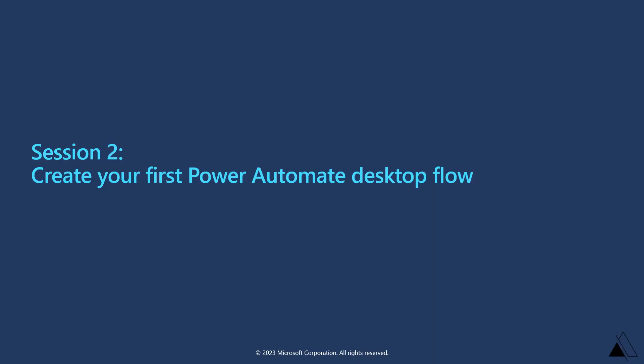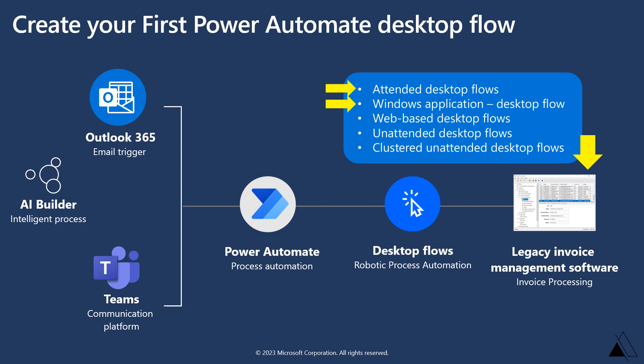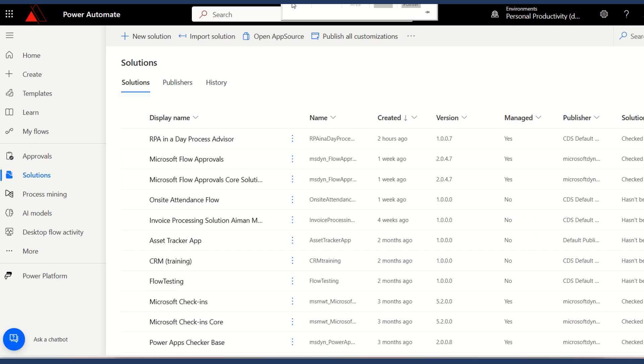Now that you're familiar with the basics of Power Automate and how everything works, let's create our first Power Automate desktop flow. In this lab, we will be creating a new desktop-based desktop flow, recording the actions performed in the desktop-based Contoso invoicing application, and performing a test run of this desktop flow. Let's start with the demo.